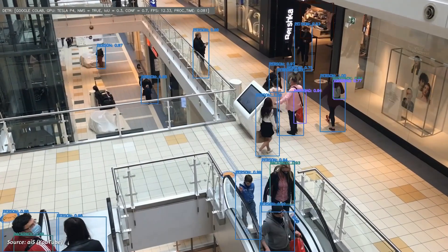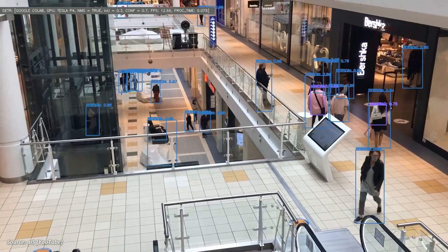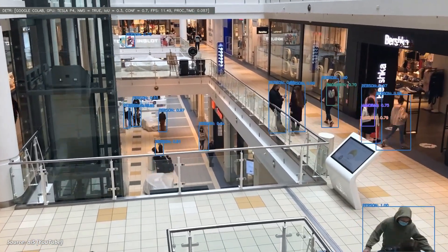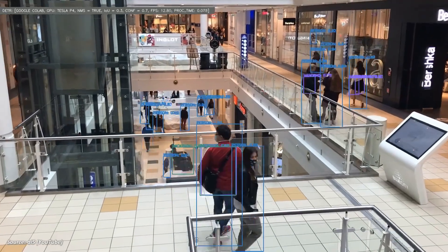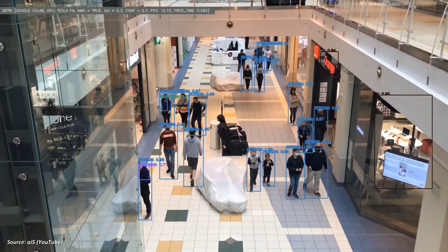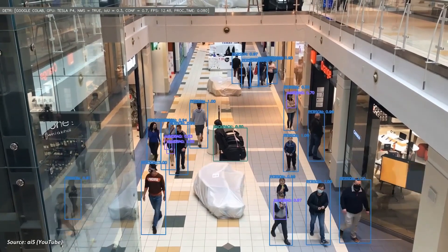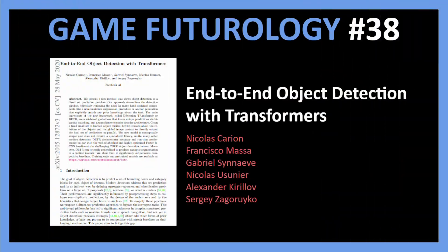So when I came across this recent paper from Facebook AI on using GPT-like transformer models on images, it got me really excited. Before I explain how this work could potentially be used for video game commentary, let's take a look at this paper. It is titled 'End-to-end Object Detection with Transformers,' or DETR in short.